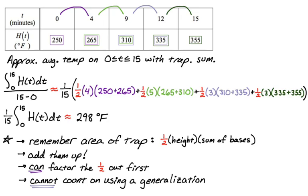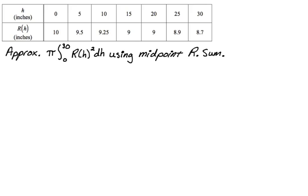Let's take a look at a midpoint Riemann sum. We have a function r of h measured in inches, where h is also in inches. We want to approximate pi times the integral from zero to 30 of r of h squared dh using a midpoint Riemann sum. First, write down the integral you're approximating, use approximately equal to, and don't forget the pi — any constant multiple must carry through into your approximation.